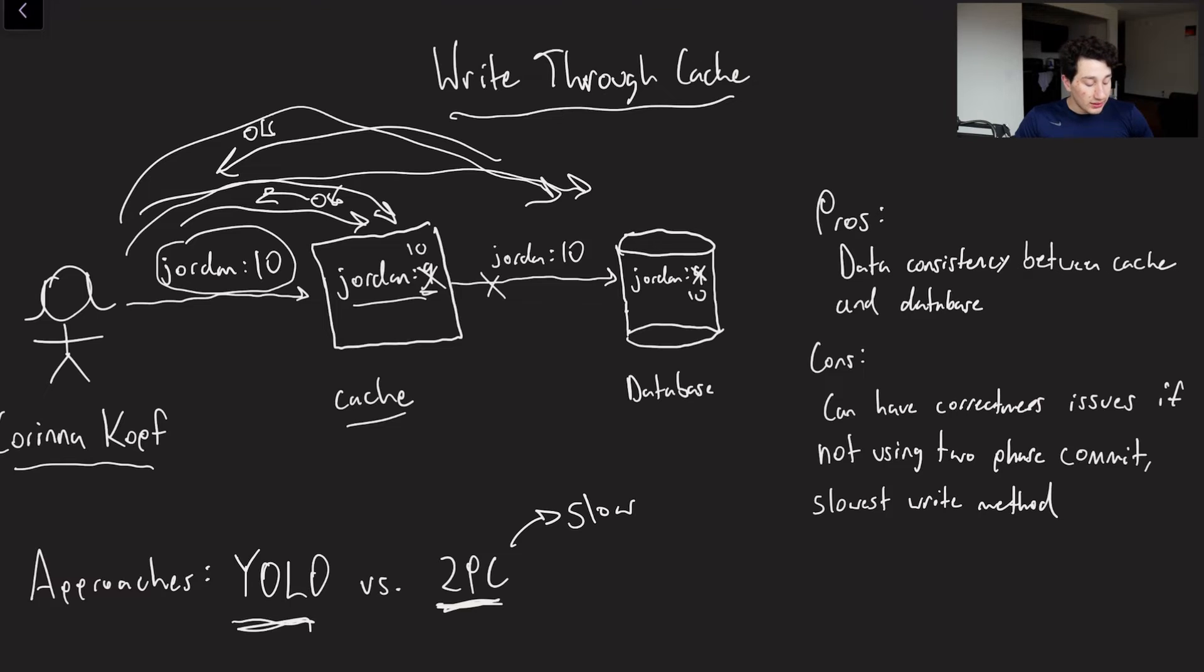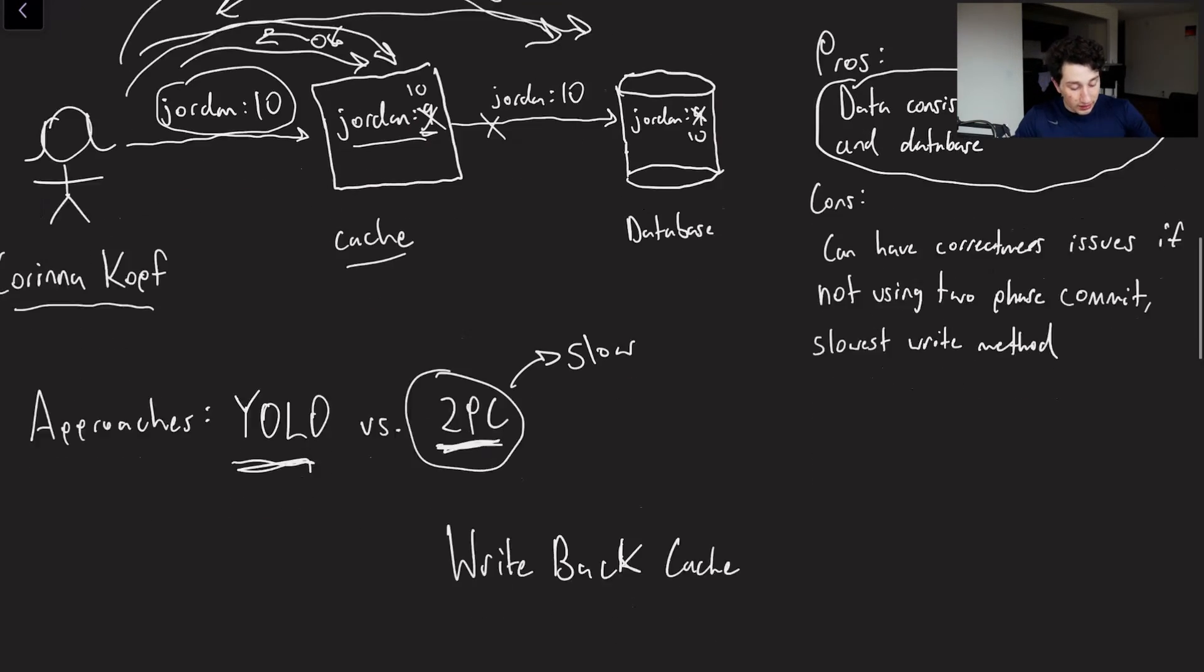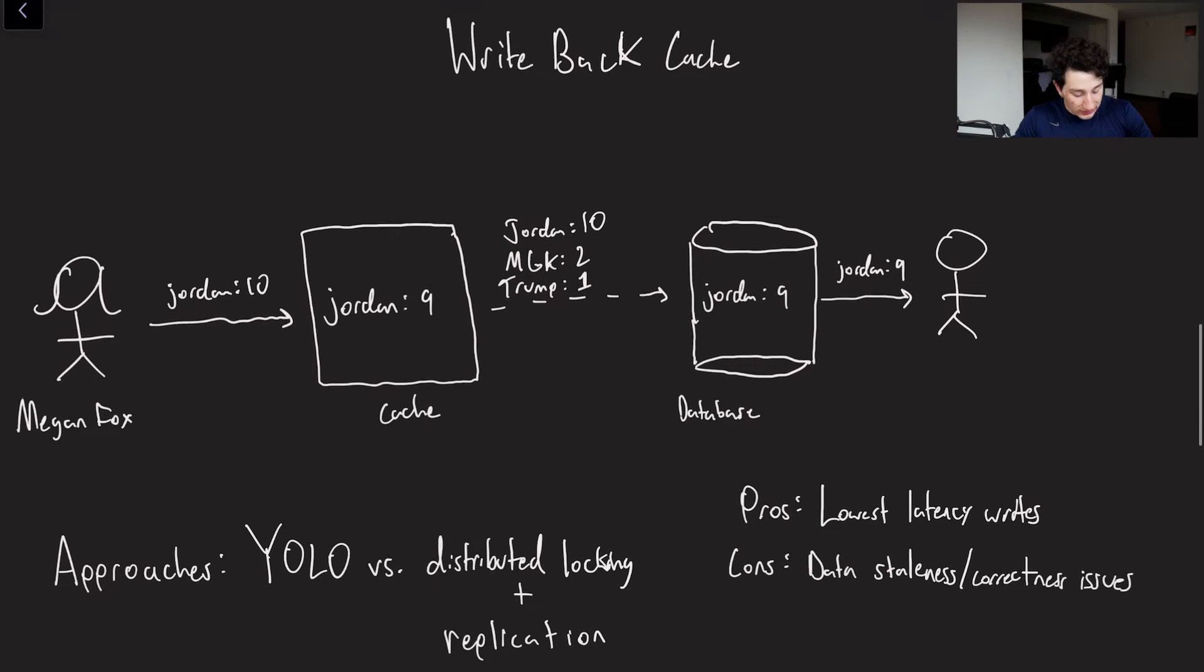So what are the overall pros and cons of these approaches? Well, basically, of course, we do have nice data consistency, simply because of the fact that whenever you write to the cache, that write is also going to the database and vice versa. But at the same time, it's relatively slow, because you have to write data to a couple of places. And especially in the two-phase commit case, it's super slow. So again, kind of use case dependent when you want to be using this, there's definitely no objective solution here.